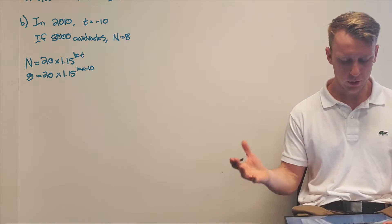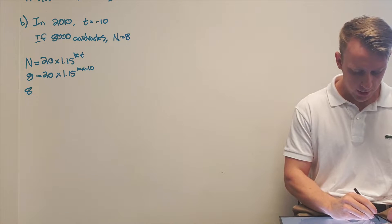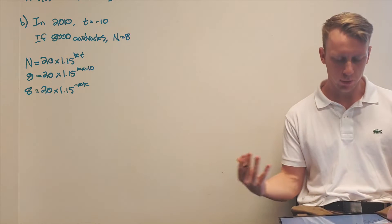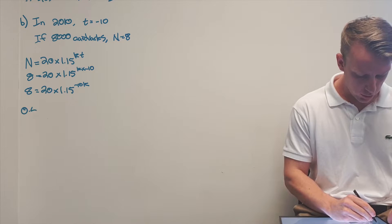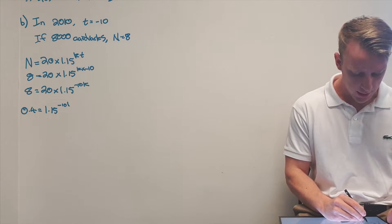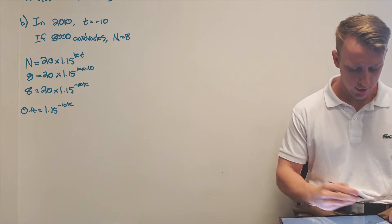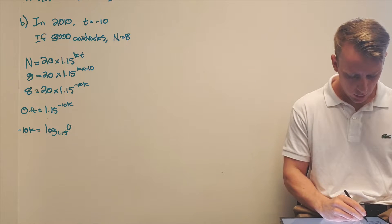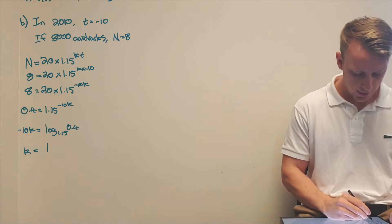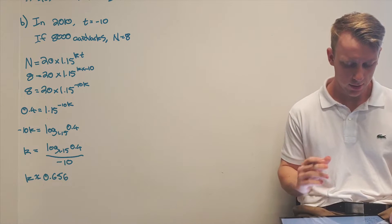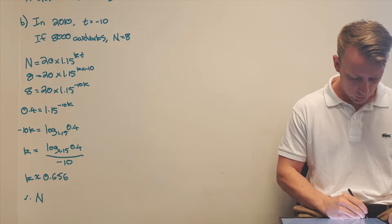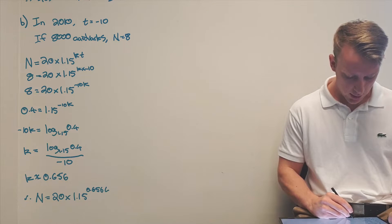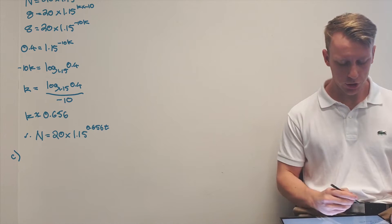Solving for k: we get 8 equals 20 times 1.15 to the power of negative 10k. Dividing both sides by 20 gives 0.4 equals 1.15 to the power of negative 10k. Using a direct logarithmic translation, we solve to find k, yielding the model n equals 20 times 1.15 to the power of 0.656t.